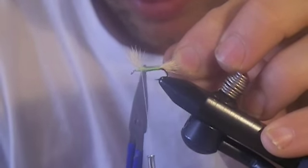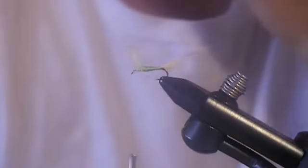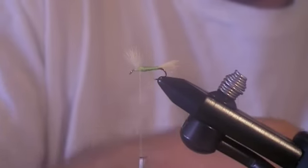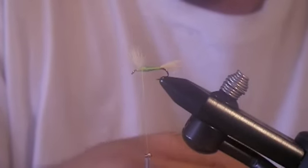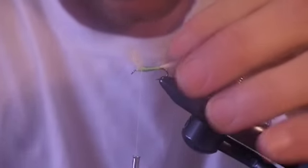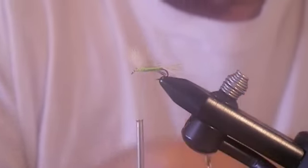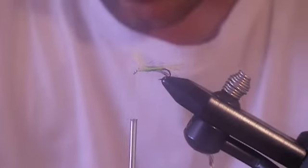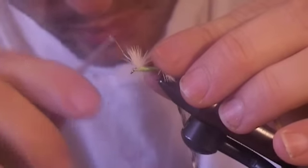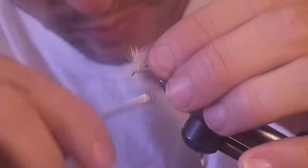We've got the body built up, so we trim off the excess. Now the tricky part. This is where we're going to tie in two different hackles. The first one I'm tying in is a grizzly hackle, black and white. The second one I'm tying in is a brown hackle. I'm tying them right on top of each other.